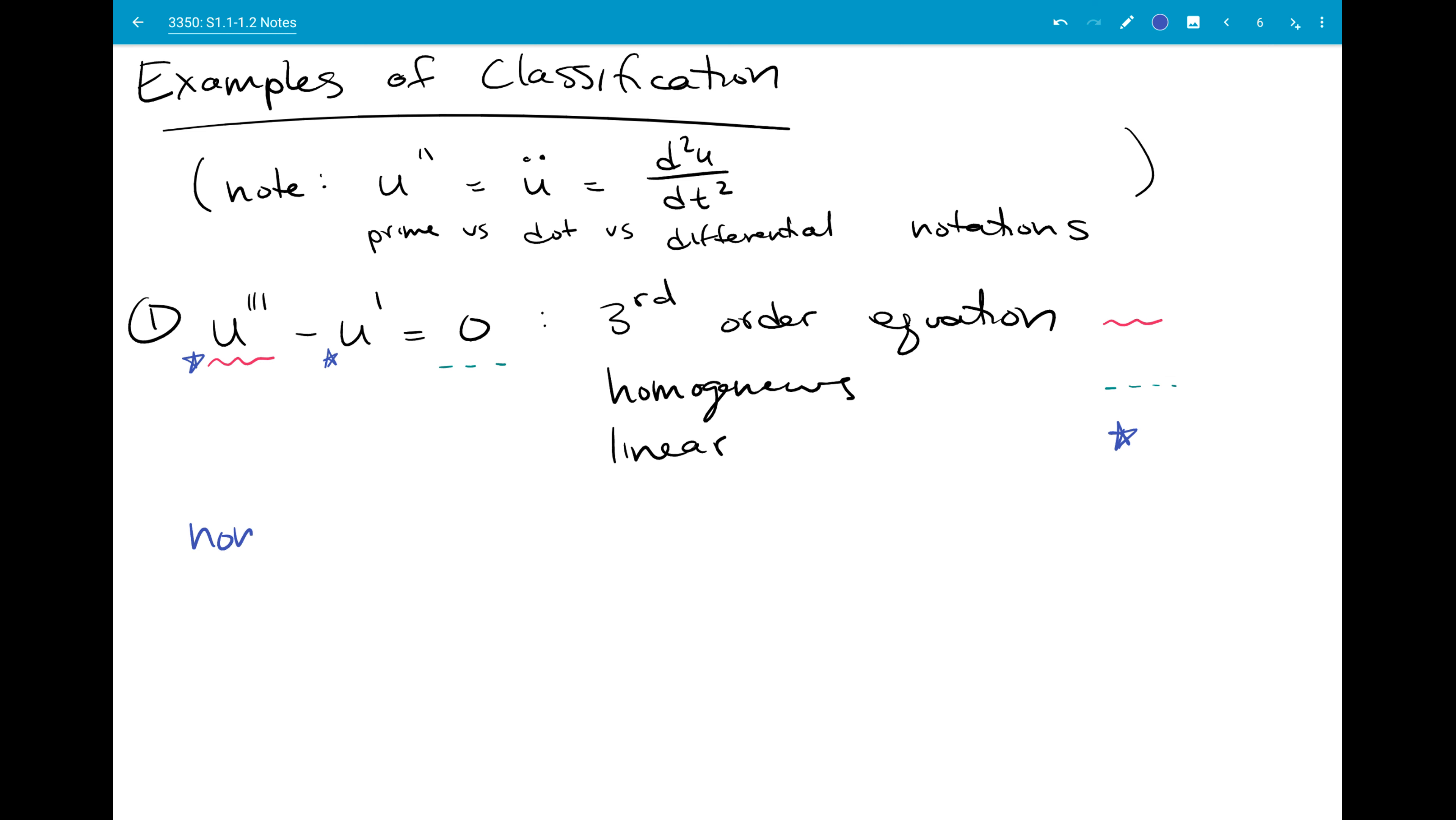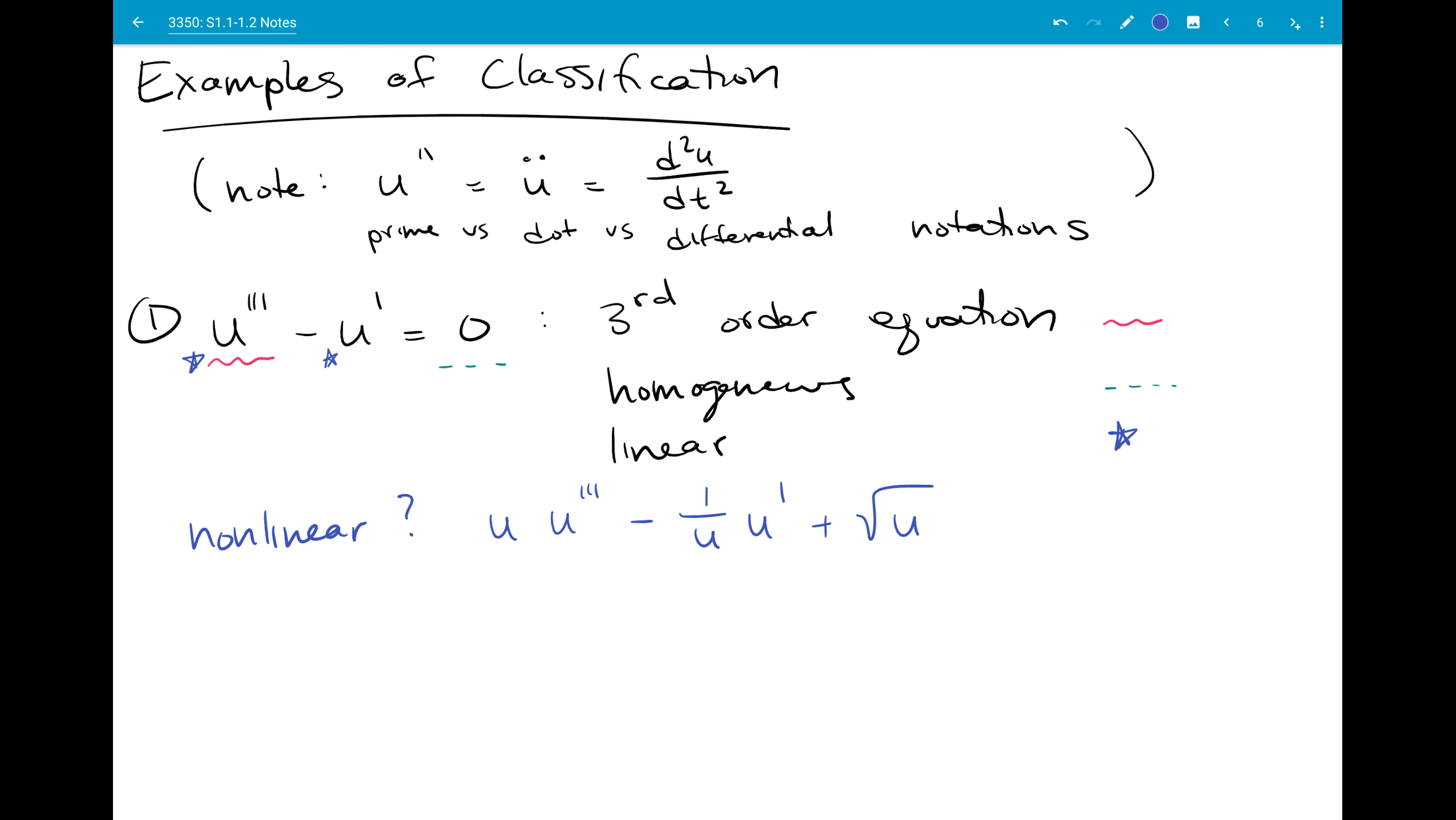If I wanted to write an example that was non-linear, maybe I could have u times u triple prime minus 1 over u, u prime, plus the square root of u, that's a lot of different ways that you could multiply u and its derivatives together, that would be non-linear. Let's say I wanted to make it so that it was non-homogeneous. Then I could still have that u triple prime minus u prime, but I would have it equal to x squared plus 7. Now, u and all its derivatives are on one side of the equation, but there's something that's not zero left over, there's a function of x, so that's a non-homogeneous equation.